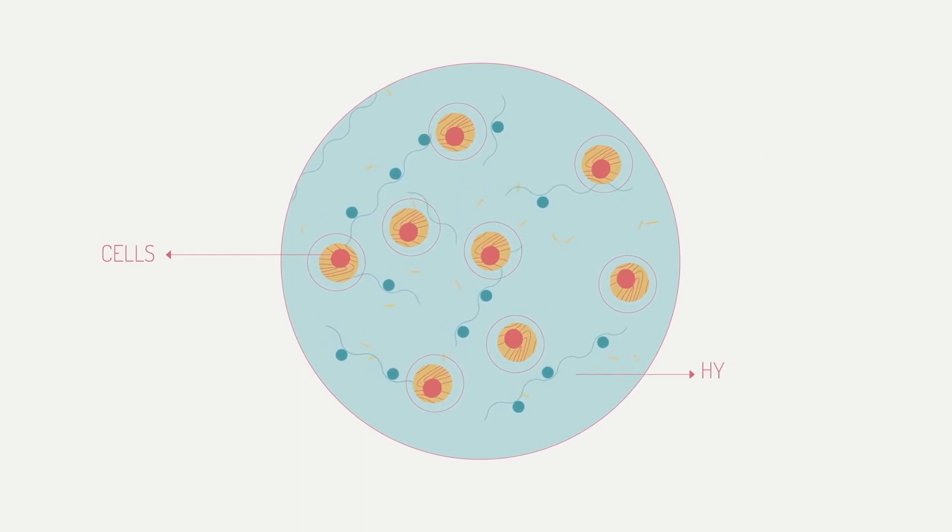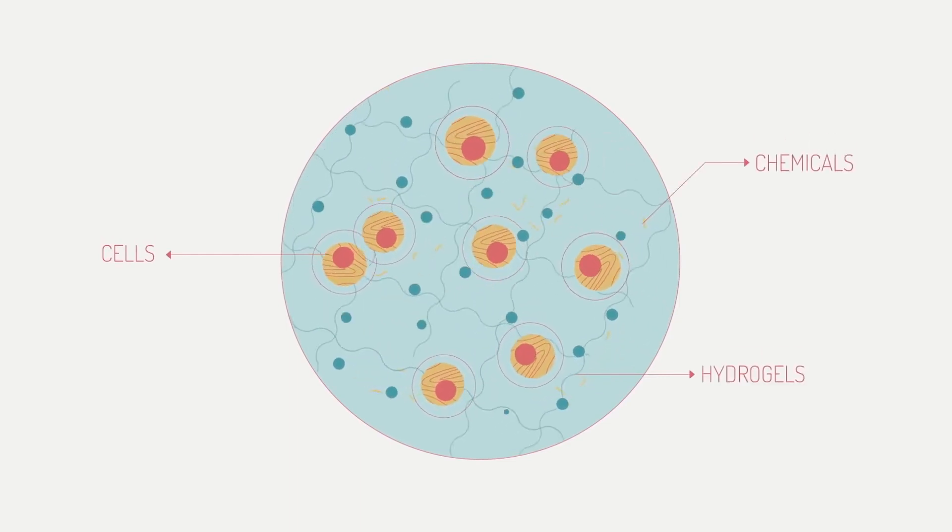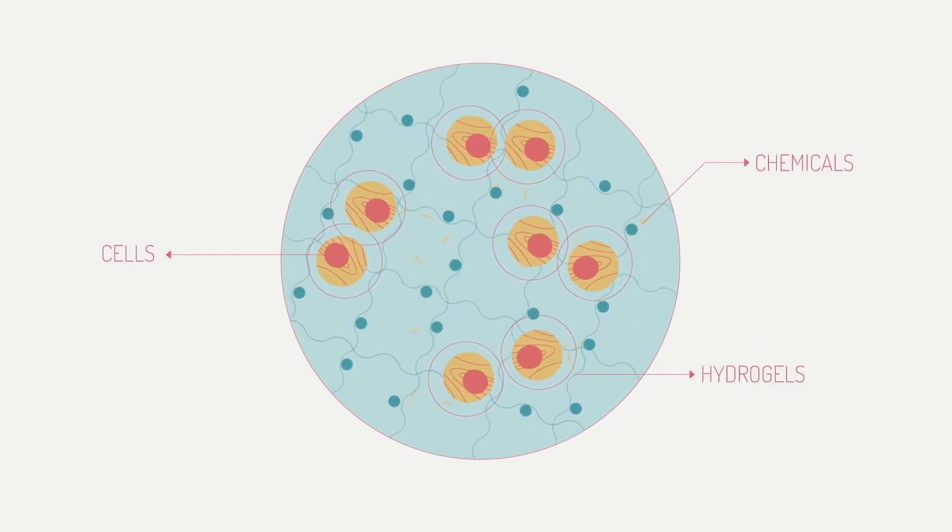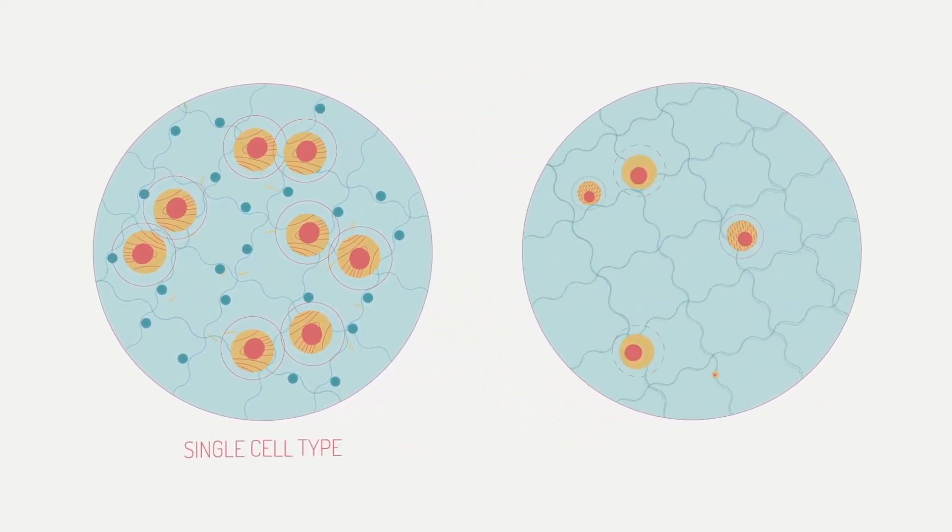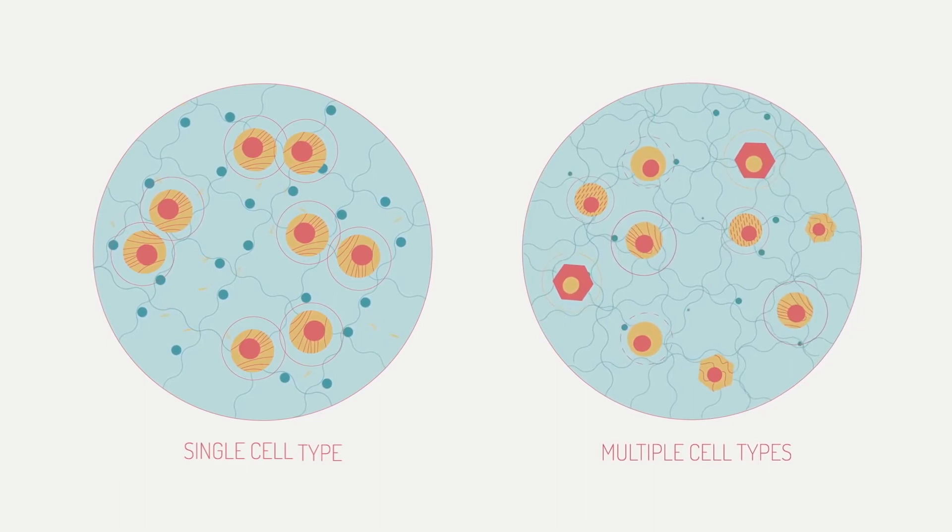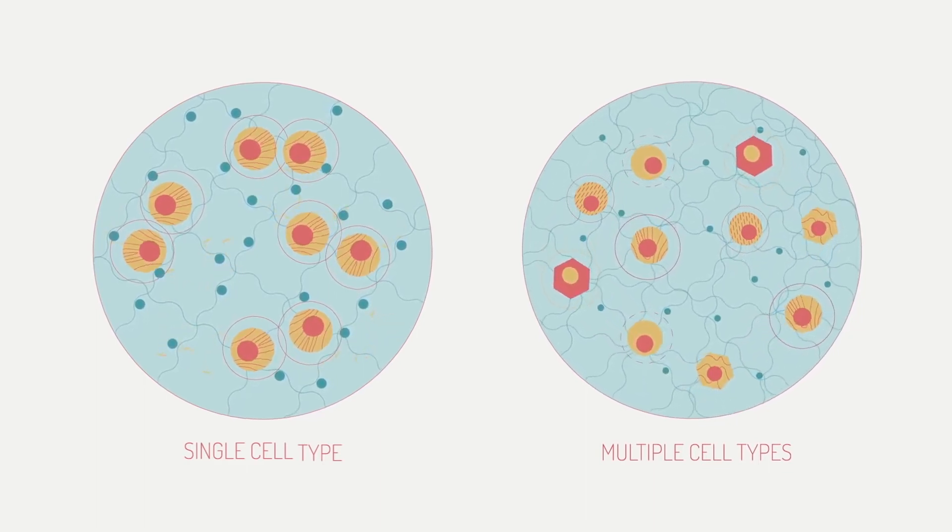The bulk of many bio-inks are water-rich molecules called hydrogels. Mixed into those are millions of living cells, as well as various chemicals that encourage cells to communicate and grow. Some bio-inks include a single type of cell, while others combine several different kinds to produce more complex structures.